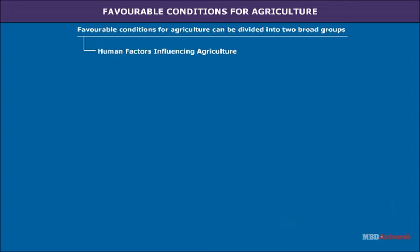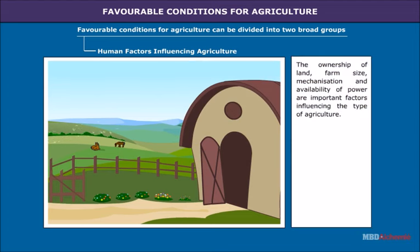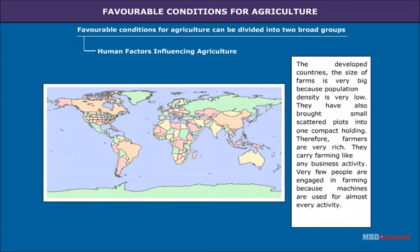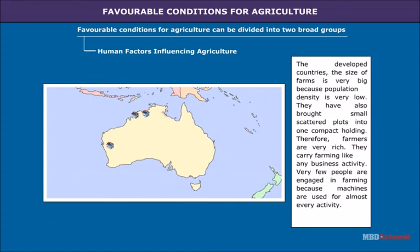Human factors influencing agriculture are also called social, economic or cultural factors. The ownership of land, farm size, mechanization and availability of power are important factors influencing the type of agriculture. Level of economic development is also an important factor. In developed countries, the size of farms is very big because population density is very low. They have also brought small scattered plots into one compact holding. Therefore, farmers are very rich and carry on farming like any other business activity. Very few people are engaged in farming because machines are used for almost every activity.